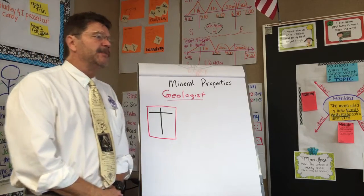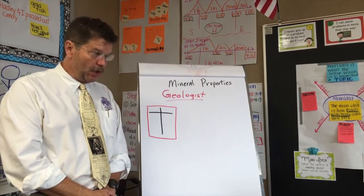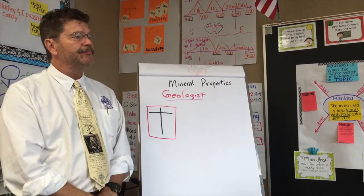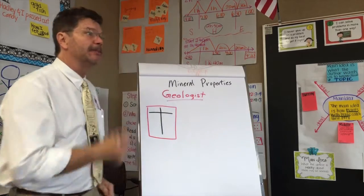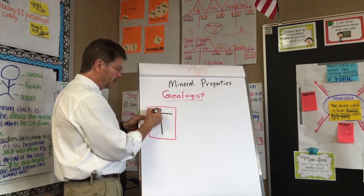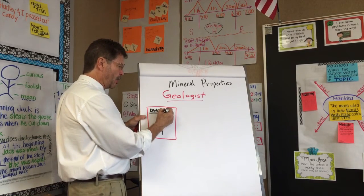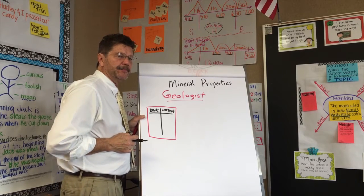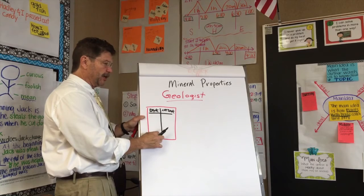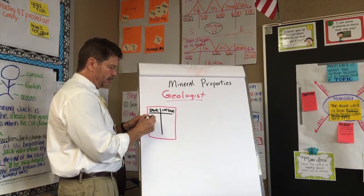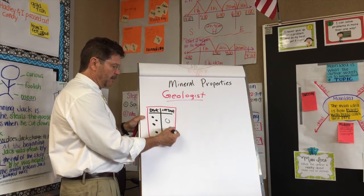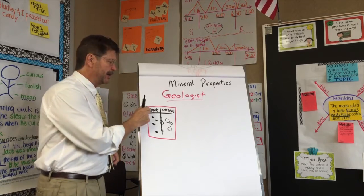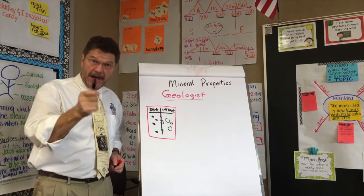You have about ten different minerals on your desk. What is one way we could sort these? Color. How about we sort them like this — if they are dark, they go on this side, and if they're not dark, they go on this side. And if there's any that you don't know, guess where you put them? In the middle. Go ahead and sort your minerals by dark and not dark.